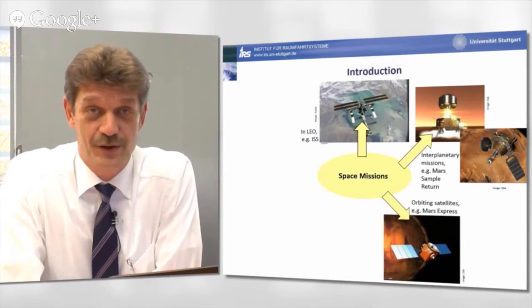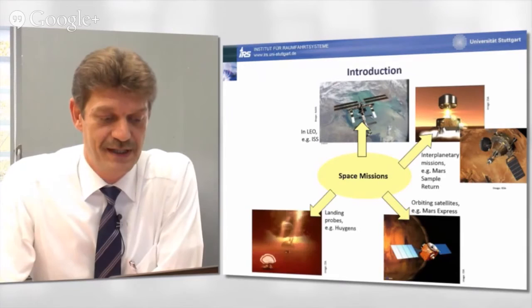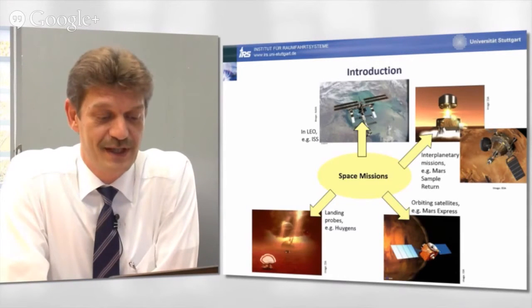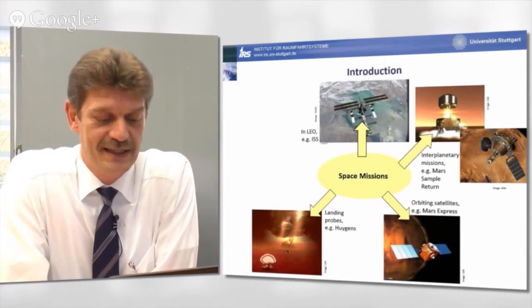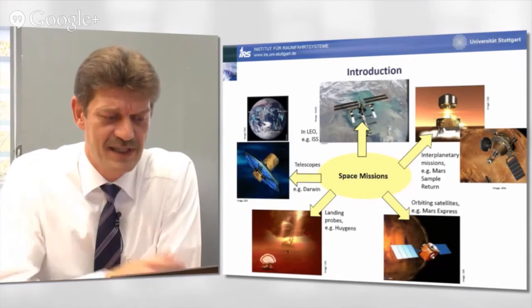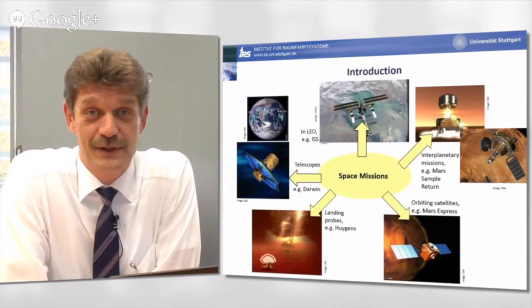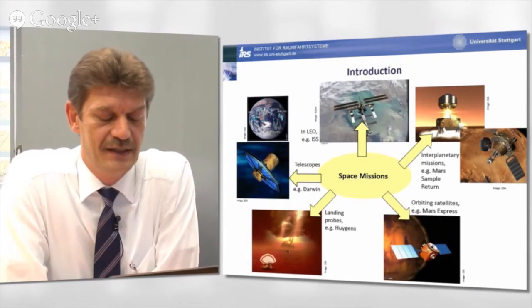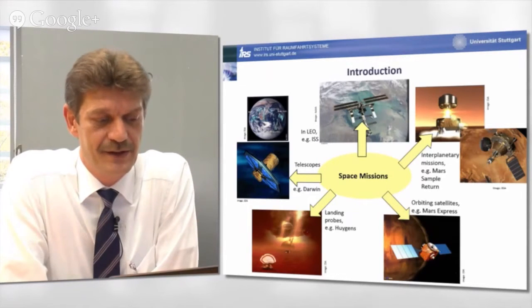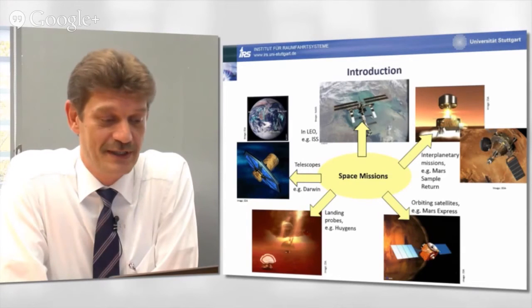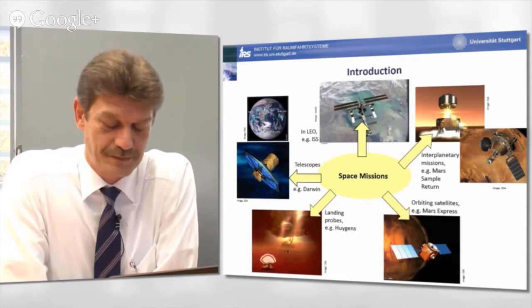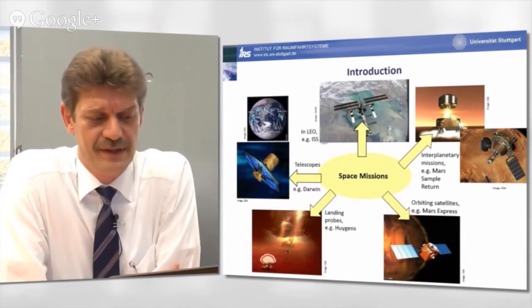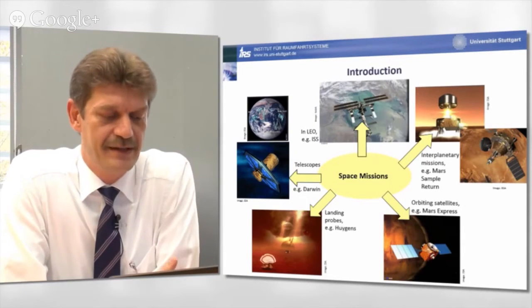We have satellites for planetary missions, even maybe landing on different planets and maybe one day also returning from there. We have satellites orbiting other planets. We have satellites landing on moons, as for example, the Huygens probe which landed some years ago on the Saturn moon Titan.